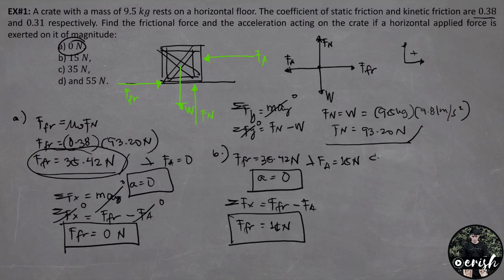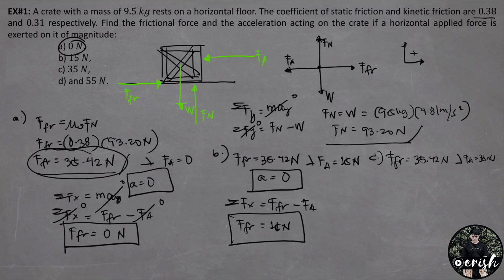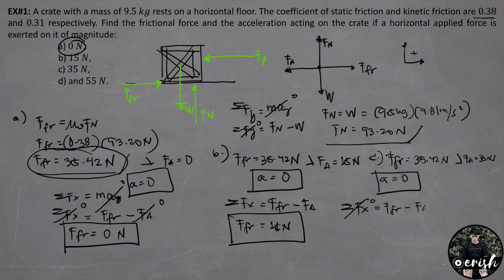For letter C, we compare the static friction force of 35.42 N with the applied force of 35 N. Since static friction is still larger, there is still no motion and the acceleration is 0. By summation of forces at x with zero net force, the force of friction equals the applied force: 35 N.